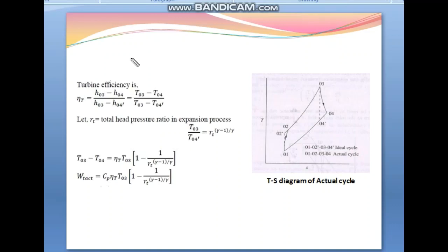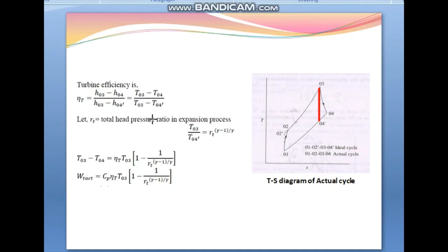Now, in case of turbine efficiency η_T, we define it as the actual turbine work output divided by the isentropic turbine work output. The actual turbine work output corresponds to process 3–4 (the actual process), while the isentropic turbine work output is represented by the red straight constant-entropy line 3–4 dash. Since the isentropic work output is higher than the actual work output, turbine efficiency η_T = (T3 − T4) / (T3 − T4 dash).